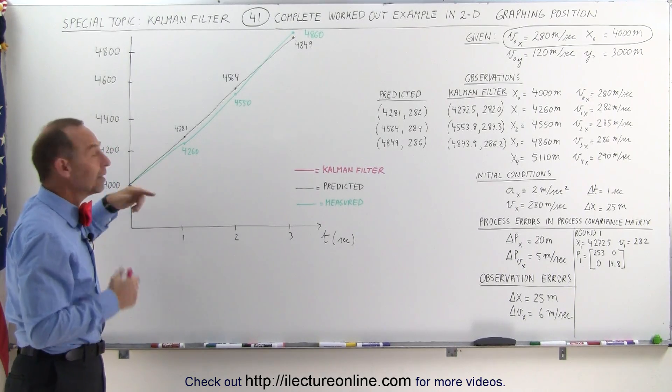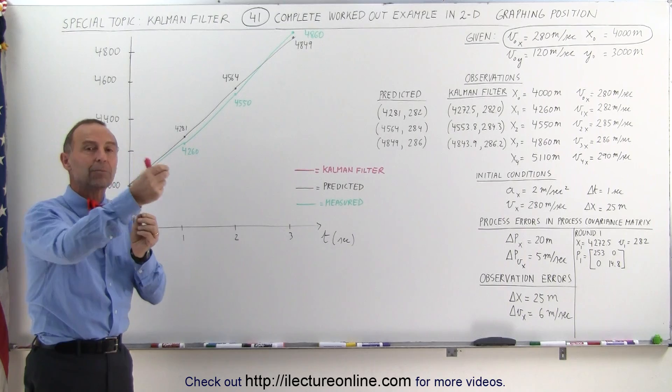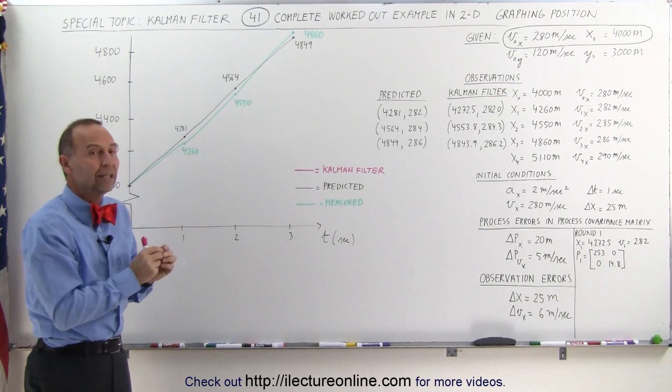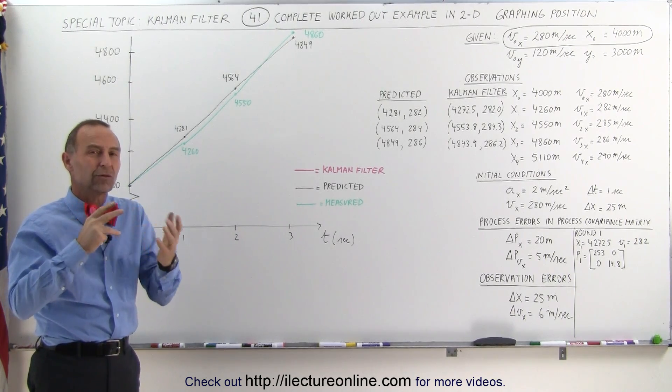The second one would be the measured values. Let's say we're tracking it with a radar. We get position and velocity from our radar calculations, and we plug those in. And of course, those tend to be somewhat erratic because we don't track perfectly.